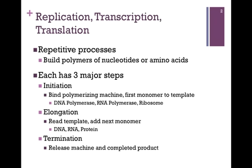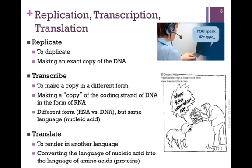After we've initiated the synthesis of our polymer, we continue in the process of elongation, where we read the template and add the next monomer. This is the truly repetitive part of each process. In replication it involves synthesizing DNA, in transcription we're making RNA, and in translation we're forming protein. Eventually we reach the end of the template and the process of termination begins — the molecular machine is released along with the completed product. Let's define these terms to gain a better grasp of the overall purpose of each process.